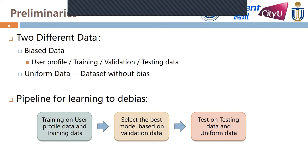Except for the biased dataset, in order to evaluate the debiasing ability of our model, we further need an unbiased dataset — that is, the uniform data. In the uniform data, only one item will be shown to a user at the same time, so there is no bias caused by attributes and interactions. After that, we define the pipeline for learning to debias: we first train our model on user profile data and training data, then select the best model based on validation data, and finally test the click prediction ability on testing data and debiasing ability on uniform data. Note that the model needs to infer real user preference totally based on biased data.